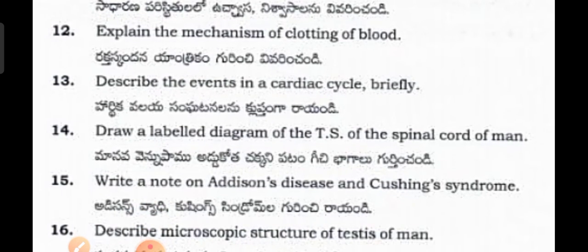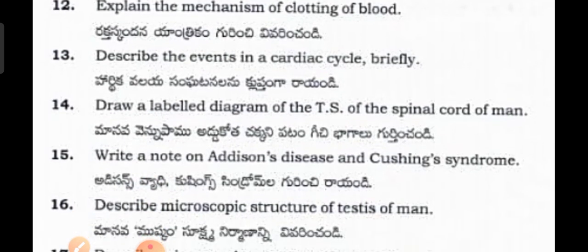This is a very important question. Draw a labelled diagram of the transverse section (TS) of the spinal cord of man. What is the contraception method? Describe the various diseases and disorder vaccines.